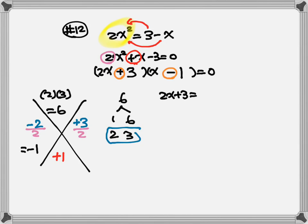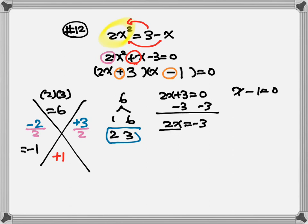Set the number in each parenthesis equal to 0 and solve for x. Here: minus 3, minus 3, so 2x equals negative 3, divided by 2, so x equals negative 3 over 2. And here, x equals 1.